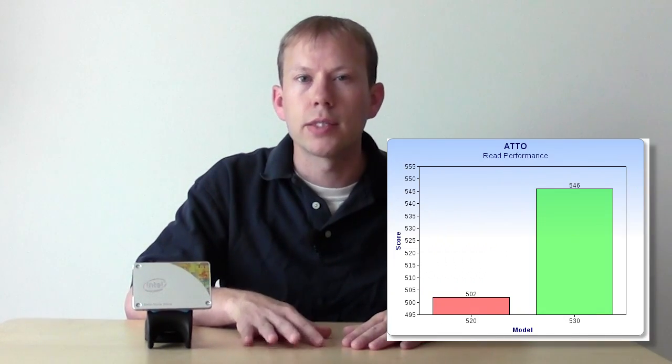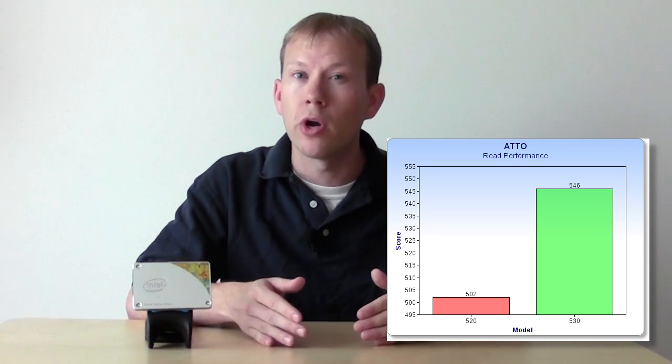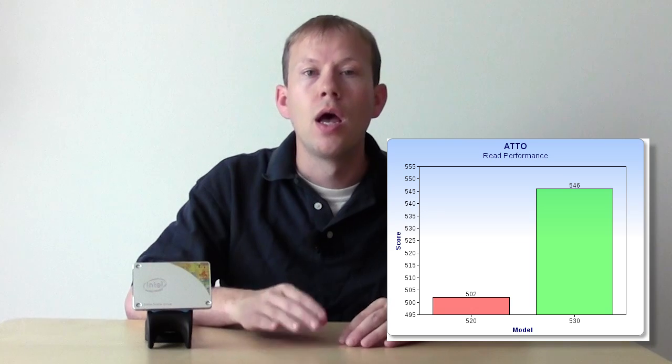The 530 does outperform the 520 though, with excellent read and write performance, measuring up to 540 megabits per second read and 490 megabits per second writes. IO performance is up as well, now hitting 41,000 random read IOPS and 80,000 IOPS random write.